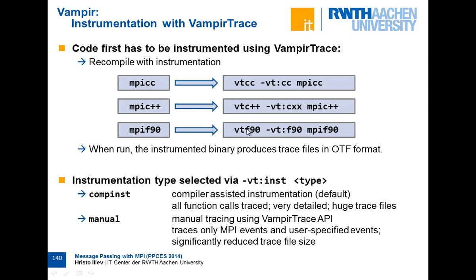The instrumented binary can be instrumented in two types. It could be completely instrumented, which generates a lot of information — information for every time a function calls another function or makes an MPI call. If you have a program with a deep call hierarchy done many times, the trace file could be enormously large. It can also monitor input, output, and system calls. The other type is manual instrumentation, which only traces MPI calls and events that you add specifically to the program.